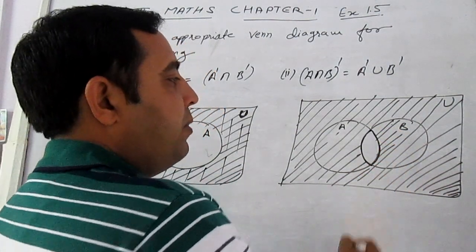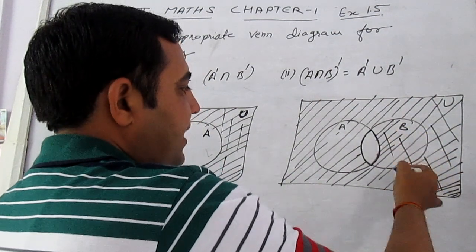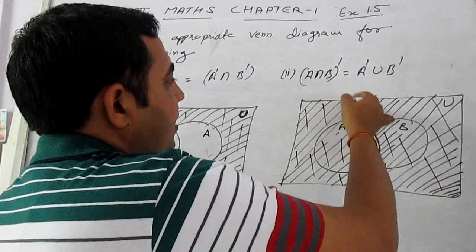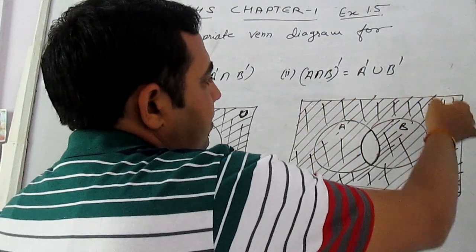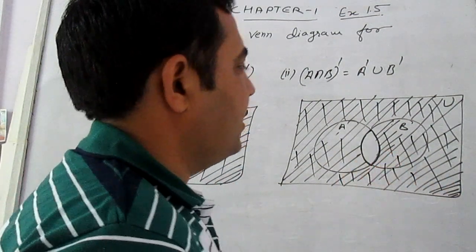A intersection B complement will be given by all elements of the universal set which are not present in A intersection B. The shaded area gives the region which does not come in A intersection B.